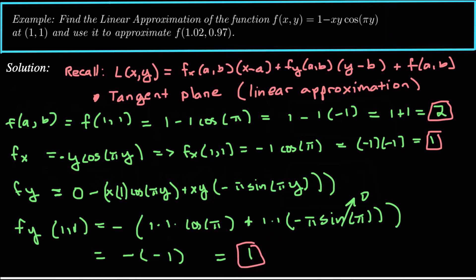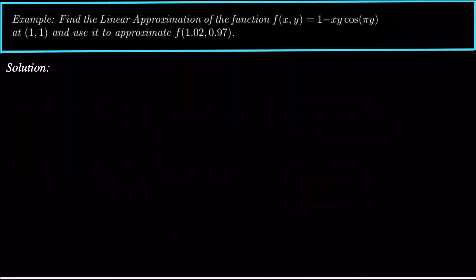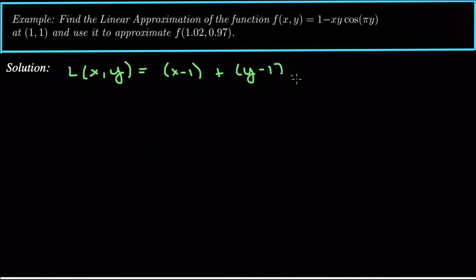Now let's find the tangent plane. We plug these three values into our equation. L(x,y) = 1 times (x minus 1) plus 1 times (y minus 1) plus 2. That's our linear approximation — or equivalently, the tangent plane equation written as z equals that expression.